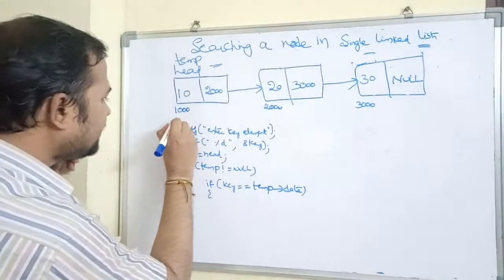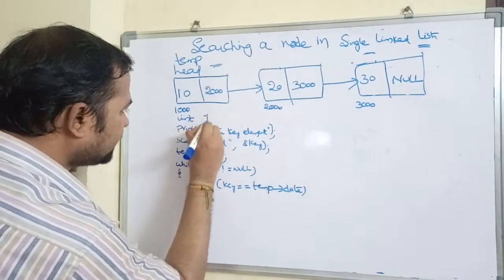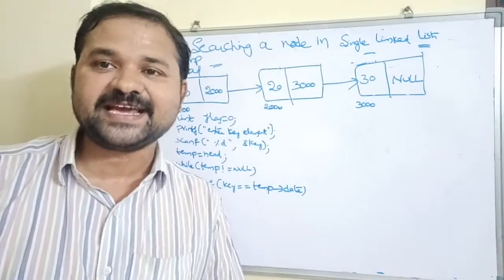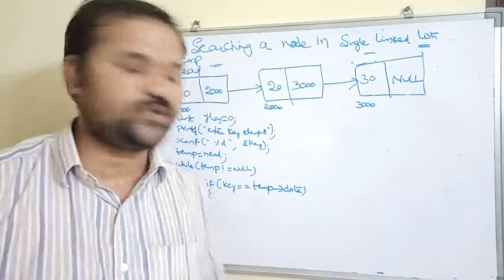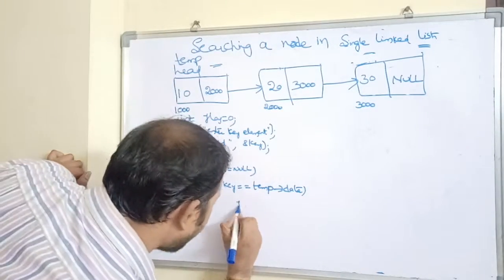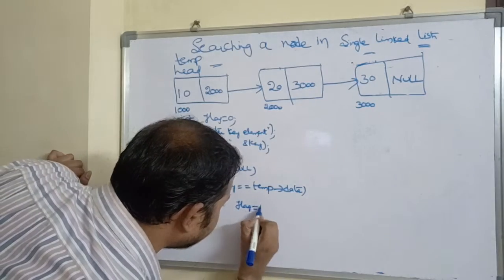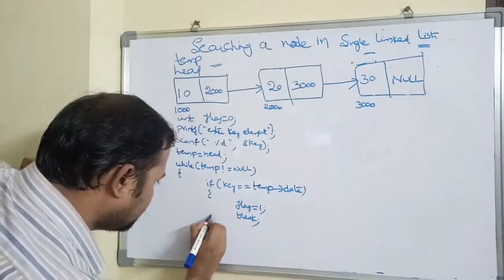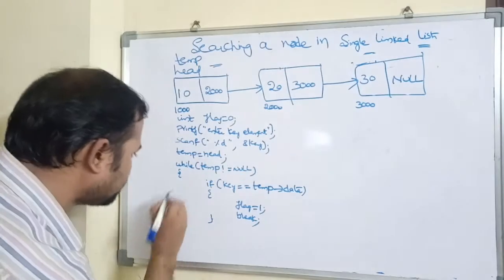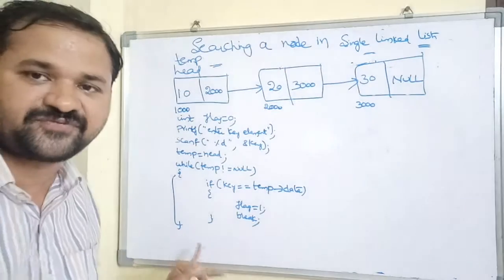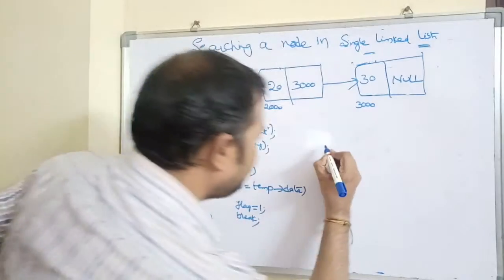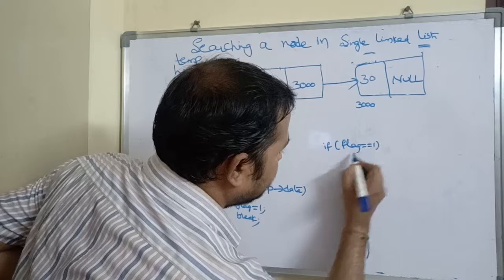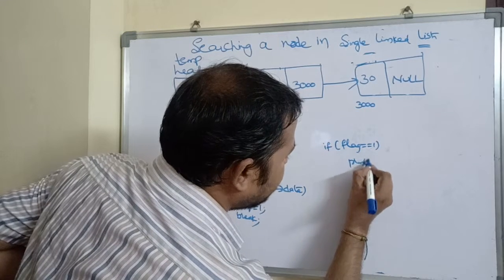We declare a variable called flag with an initial value of zero. If flag is zero, the key element is not found; if flag is one, the key element is found. So when key == temp->data, we set flag equal to 1 and break. Then we close the if block and close the while loop. After that, we write the output logic.